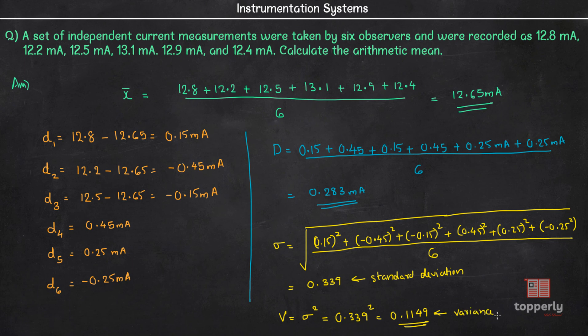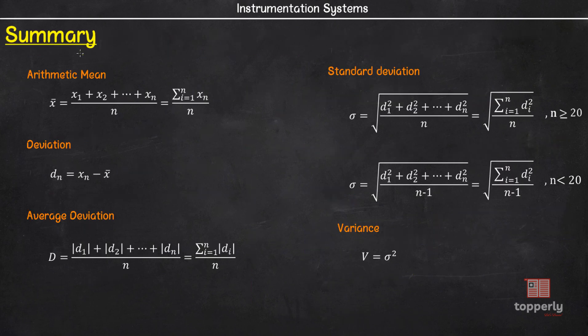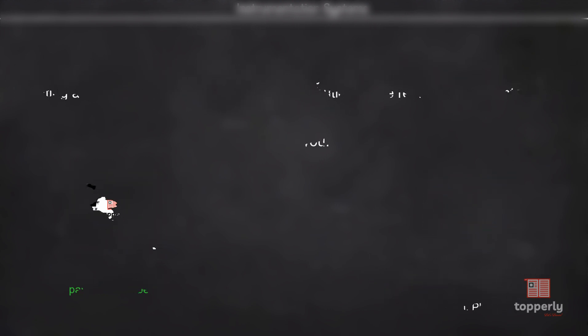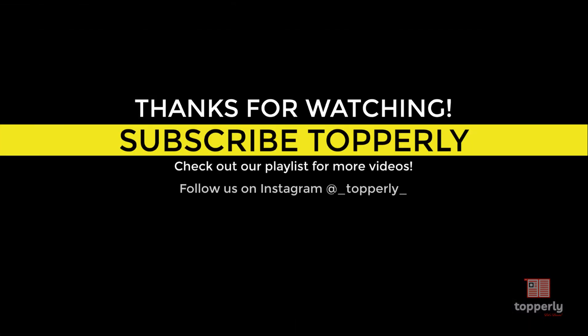So that's all for this lecture. To summarize, we learned about arithmetic mean, deviation, average deviation, standard deviation and variance. If you found the lecture useful, please like the video and support us by subscribing to the channel. If you have any doubts, feel free to ask them in the comments so that either me or some other viewer can help you. In the next video, we will start our discussion on measurement of resistances. Thanks for watching and have a nice day.